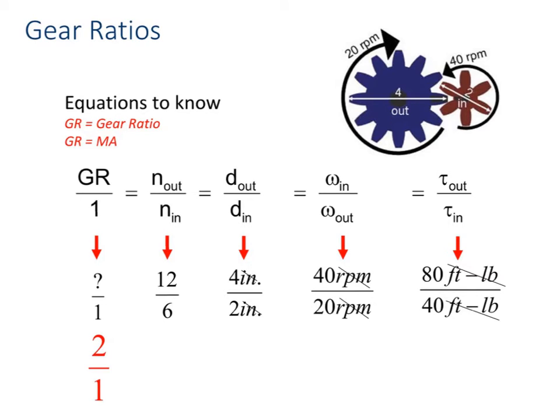It's also called the driver gear. So in, and then out is the one that's rotating based on the fact that it is meshed with the other gear. Out is also sometimes called the driven gear.